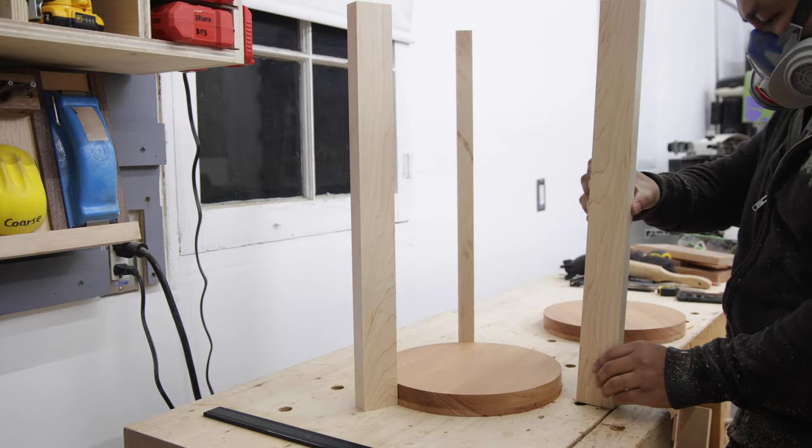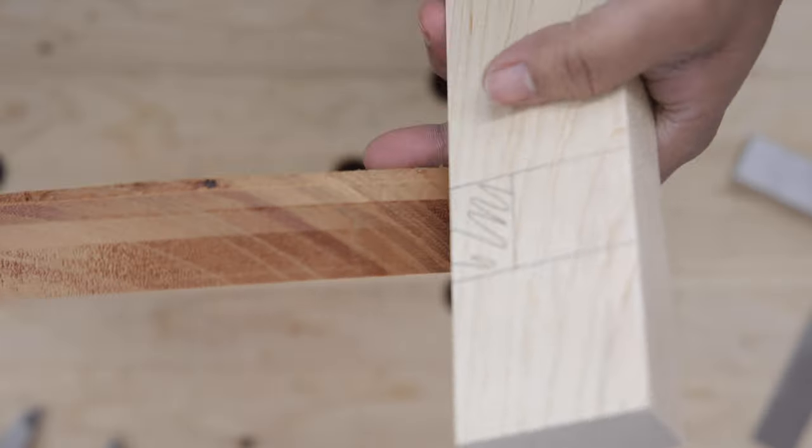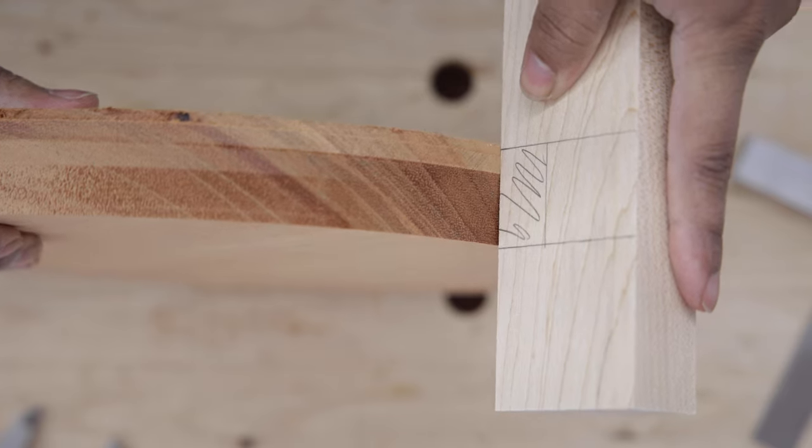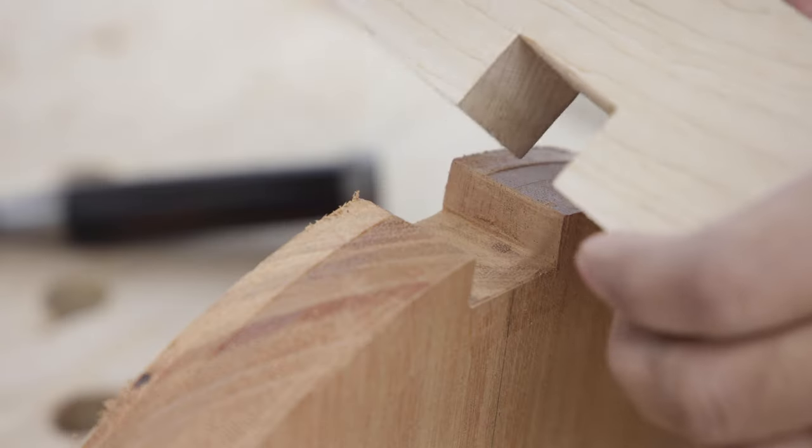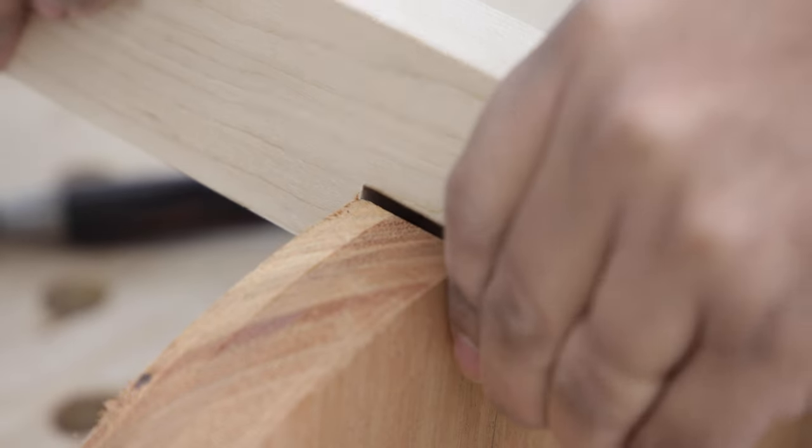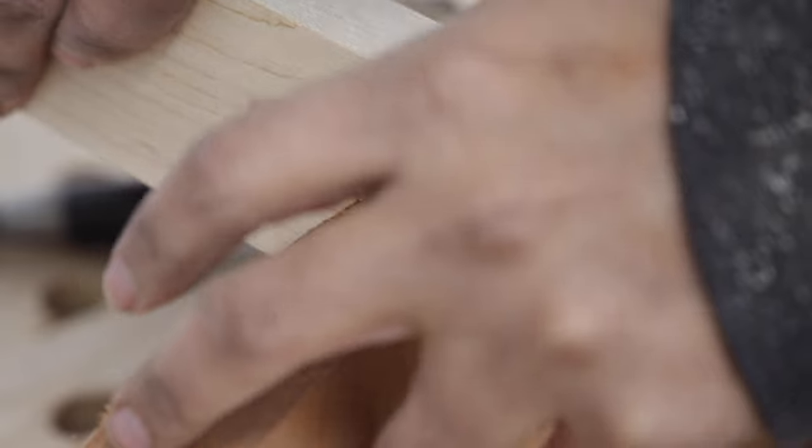With the legs dimensioned, we can do a pseudo assembly to see how the finished pieces would look. Of course, we want to do some type of joinery that allows us to fixate the legs onto the top. I want to accomplish this by making a dado channel on both the legs and the circular top, such that they interlock with each other, creating a very strong joint.